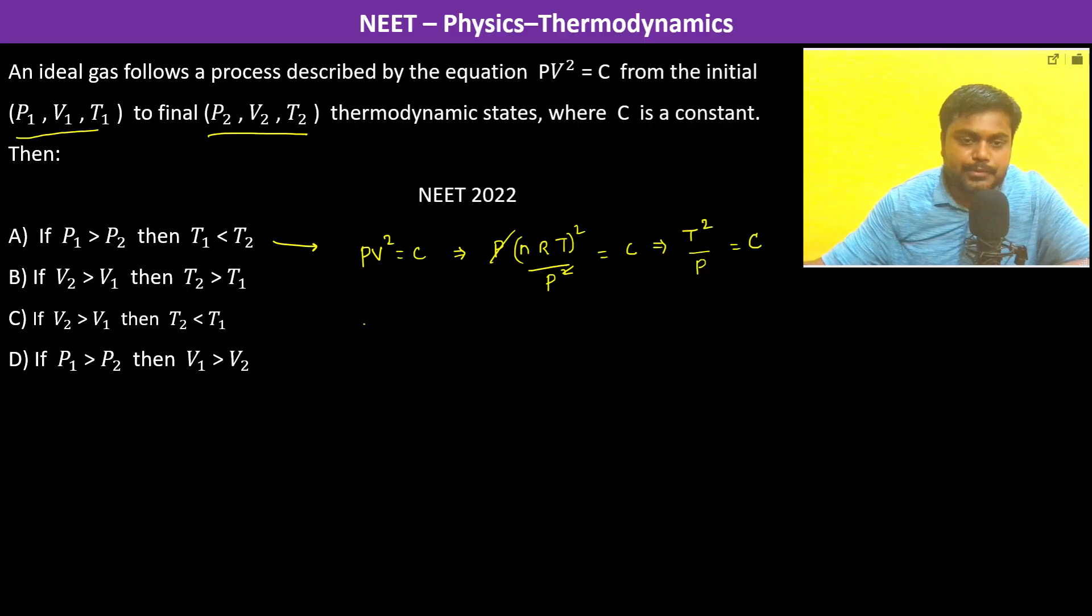Now T1 square by P1 is equal to T2 square by P2. Which is P1 by P2 is going to be T1 square by T2 square.